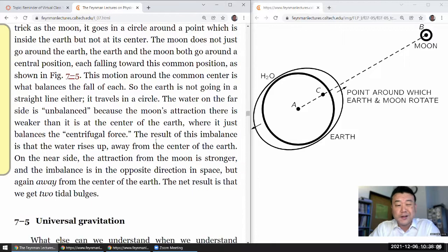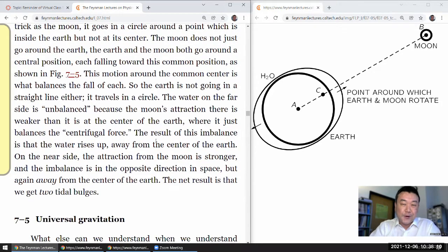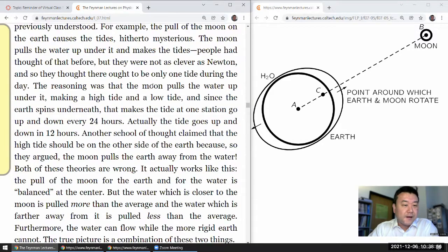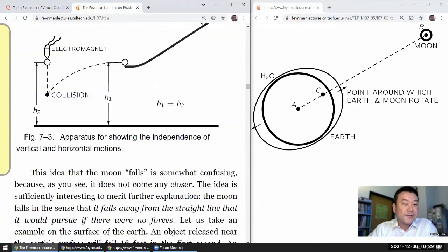The motion around the common center is what balances the fall of each. So the Earth is not going in a straight line either. It travels in a circle or ellipse, which is quite close to circle. The water on the far side is unbalanced because the moon's attraction there is weaker than it is at the center of the Earth, where it just balances the centrifugal force. The result of this imbalance is that the water rises up away from the center of the Earth. On the near side, the attraction from the moon is stronger. And the imbalance is in the opposite direction in space, but again, away from the center of the Earth. The net result is that we get two tidal bulges. So, yeah, I think this is the section I want you to read through in detail, mostly for this description here of Newton's discovery,